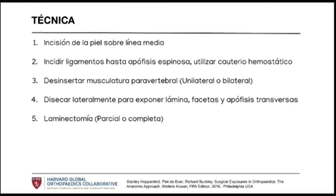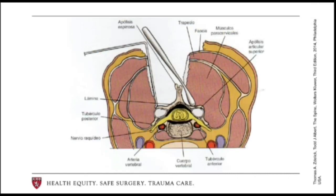For cauterization, no high voltage should be used because it causes burns that may produce neurological damage. The lamina is exposed at the facets up to the transverse process, and the procedure can be carried out. It is very important to identify the anatomical structures. When there are bifacet dislocations, the articular portions of the facets can be perceived. As seen in the diagram, the musculature is dissected laterally completely up to the articular process.